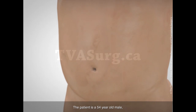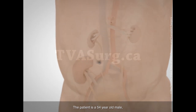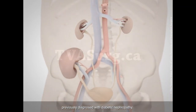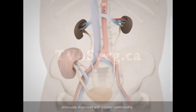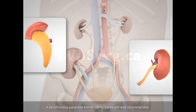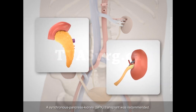The patient is a 54-year-old male, previously diagnosed with diabetic nephropathy. The patient has undergone a kidney transplant, but has since developed dialysis-dependent renal failure. A synchronous pancreas kidney transplant was recommended.